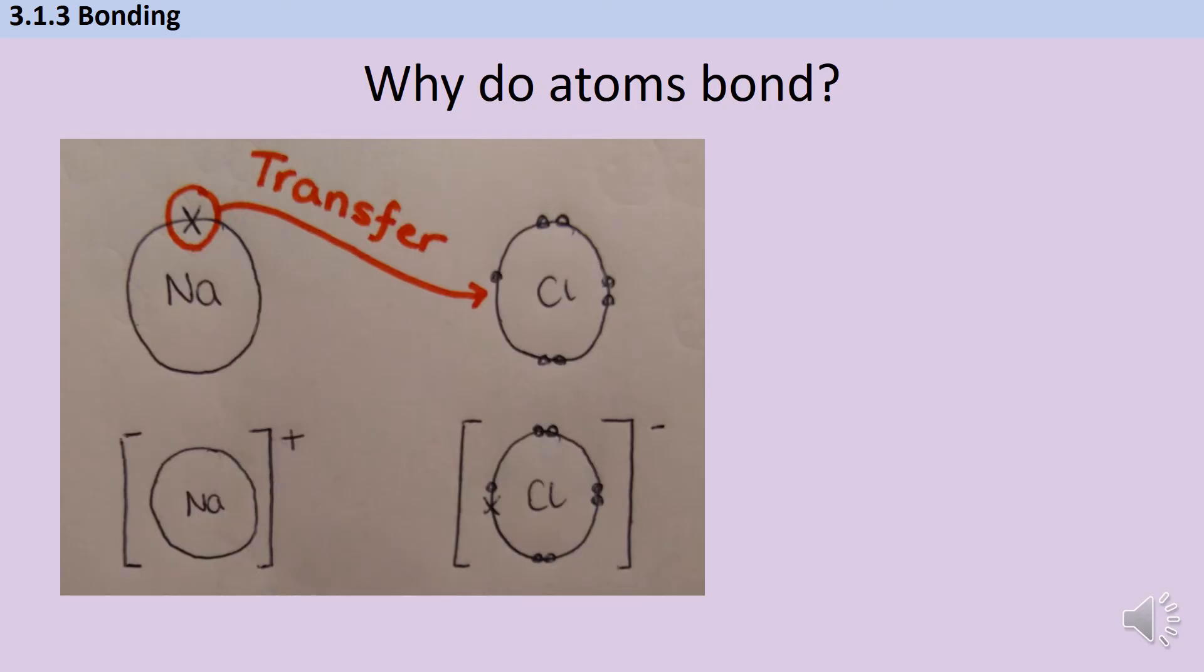The first thing is about why atoms bond. At GCSE, if you were asked why sodium bonds with chlorine, you might have said something like sodium needs to lose an electron and chlorine needs to gain an electron, and they both need to do that in order to get a full outer shell. You might have even talked about the atoms wanting those things as if they were people with personalities.